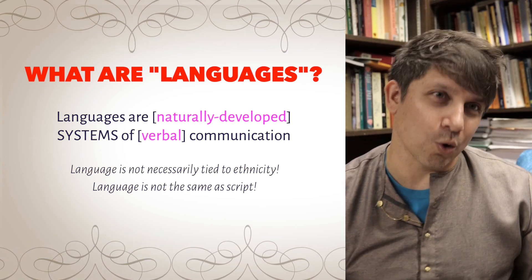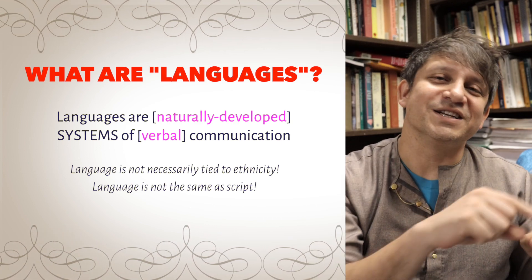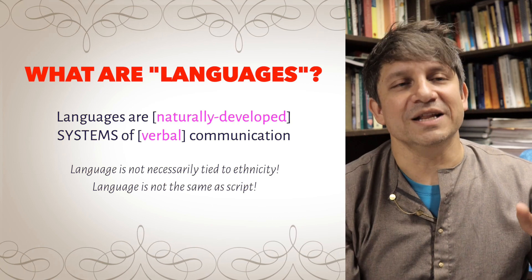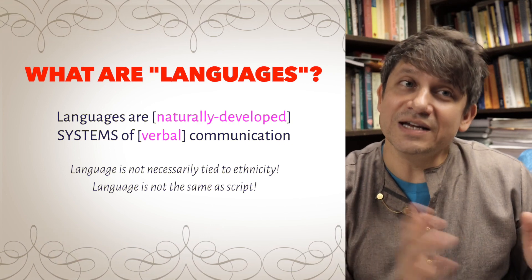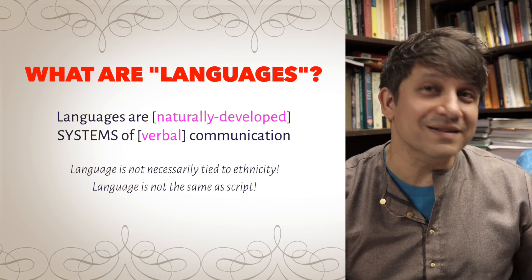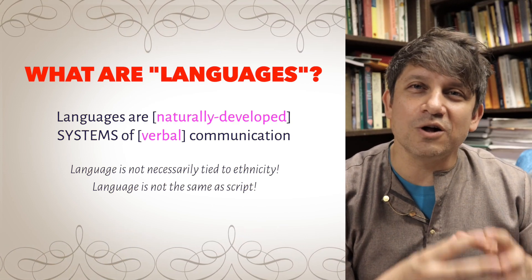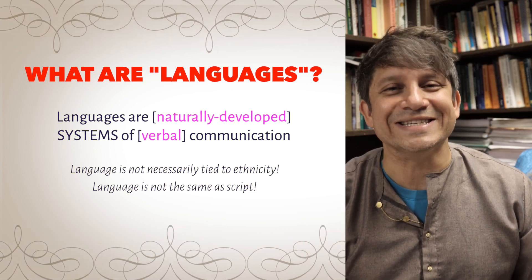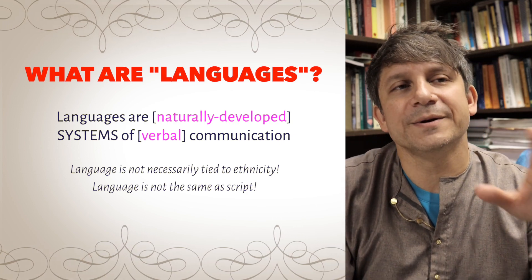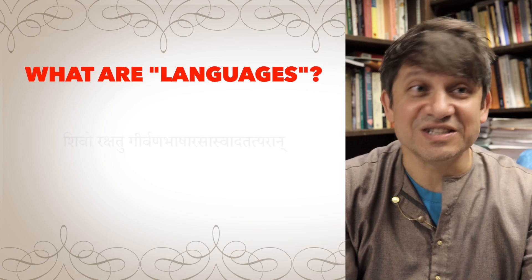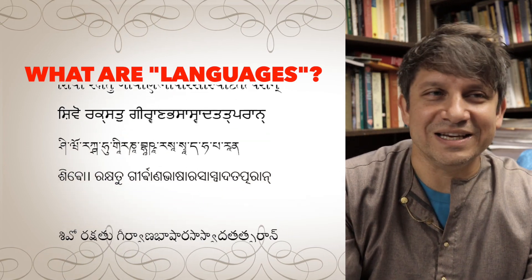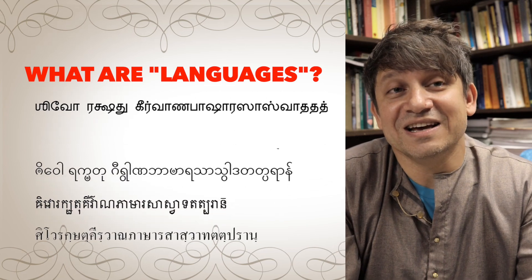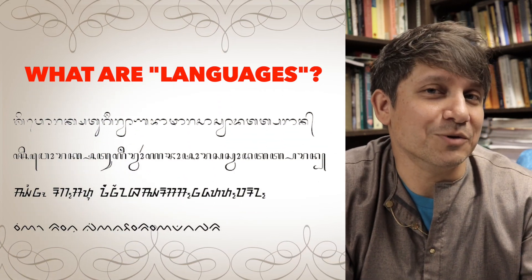Many languages can share the same script. Roman script is used for English, French, German, and so on. In India, modern Hindi, Marathi, and Sanskrit are all written in Devanagari script. The written form is almost always a simulacrum of the spoken language — an imitation of oral sounds. A language can also be written in any script: Sanskrit, usually written in Devanagari, can also be written in Roman, Thai, Sinhalese, Nepali, Tamil, Burmese, Chinese, or even Perso-Arabic script, as it was in the Mughal period.